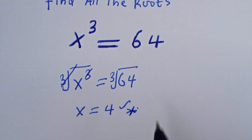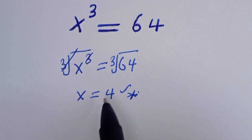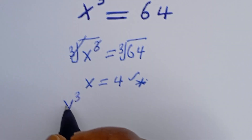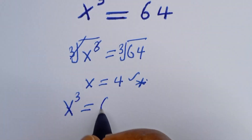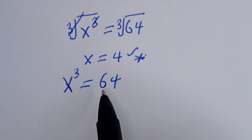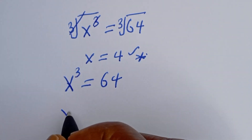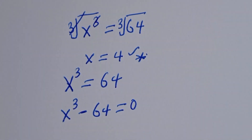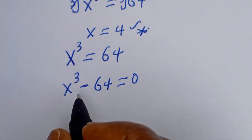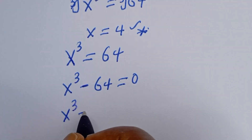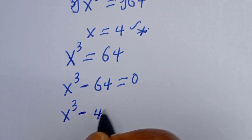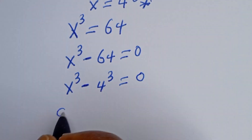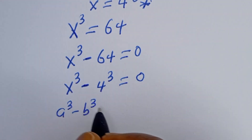Let's find all the roots of this equation. We have s to the power of 3 is equal to 64. Let's take this to the other side: s to the power of 3 minus 64 is equal to zero. Then s to the power of 3 minus 4 to the power of 3 is equal to zero.